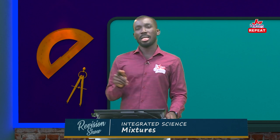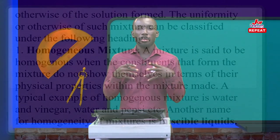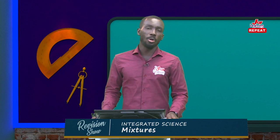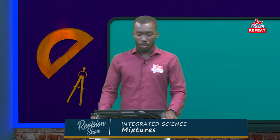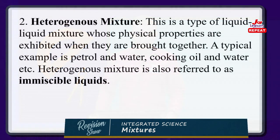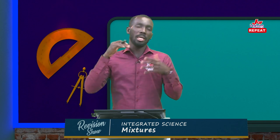Another name for homogeneous mixture is miscible liquids. Miscible liquids are liquids that mix to the point where you don't see any clear difference between any of its components or constituents. The second type is heterogeneous mixture — a liquid-liquid mixture whose physical properties are exhibited when the two liquids are brought together. There is a clear distinction between them, and you can see a clear line separating the top liquid from the bottom one.